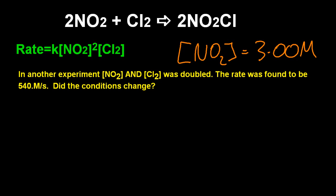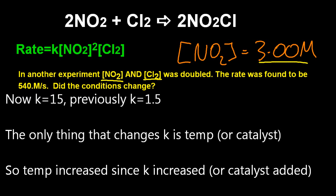That's kind of strange. The rate was found to be that. Did the conditions change? Well, what's the question? We've got concentration of nitrogen dioxide, concentration of chlorine, and the rate. So secretly the question's asking me, work out K. Well, I did that on a piece of paper somewhere else and K comes out at 15. Now before it was 1.5.